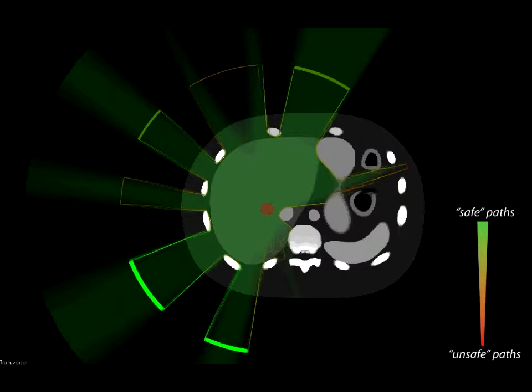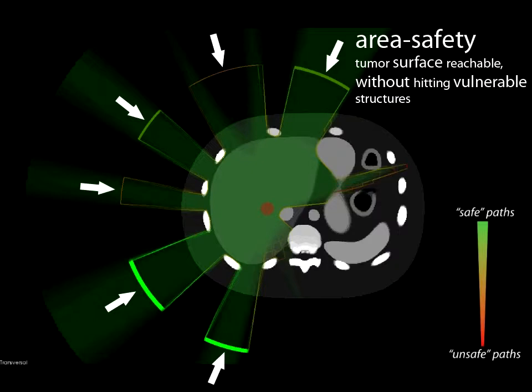To tackle this problem we propose to encode the given elbow room for every safe access area with color and different line widths of a projected geometry. As already mentioned, we call this information Area Safety.